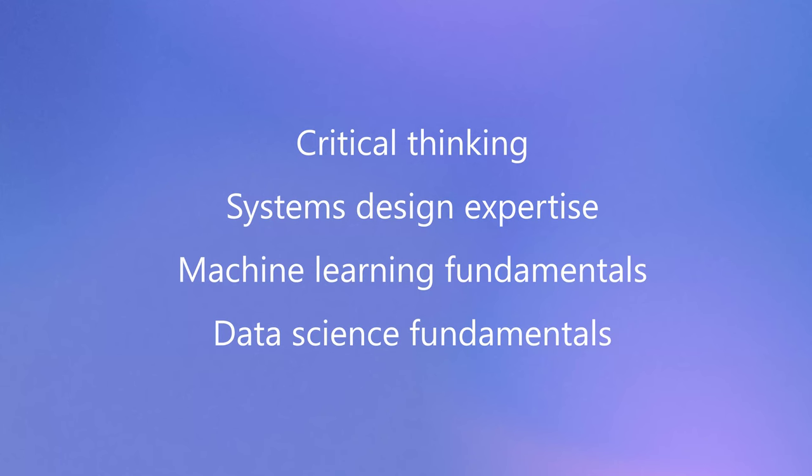Critical thinking and system thinking — you need to get up to speed on machine learning fundamentals. Not to become a machine learning scientist, but you have to understand core concepts. Do you know what a neural network is? Because the AI models you'll be working with are all based on neural networks. And remember: data is oxygen. You need to understand the concepts underlying data science because everything is based on it, and you'll be tasked with designing experiences on top of data science.